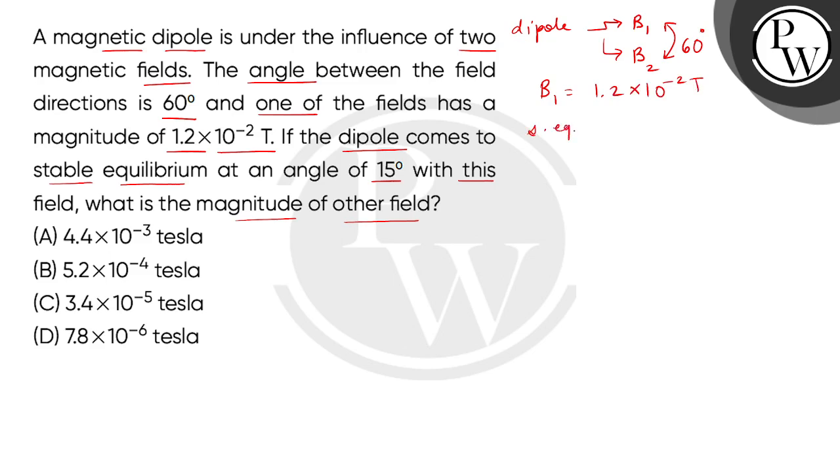When the magnet is in stable equilibrium under the effect of these two fields, the angle theta 1 is 15 degrees and we need to find B2. For stable equilibrium, we discuss rotational equilibrium. Rotational equilibrium means the torque due to the first field equals the torque due to the second field.